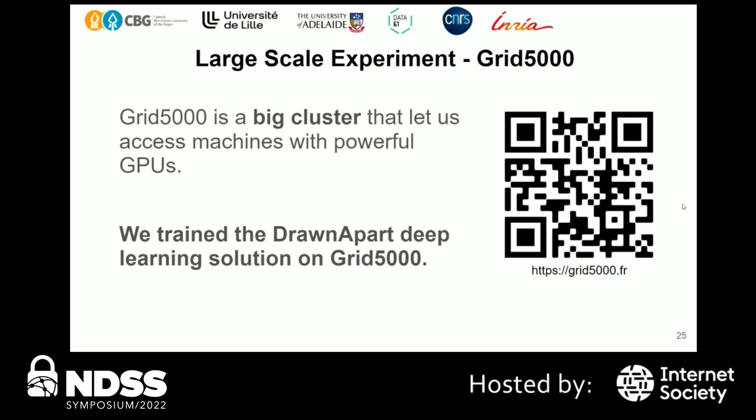Since we switched to a deep learning approach, we needed powerful machines with a lot of GPU power. We used Grid5000, a set of powerful servers distributed across different parts of France, which gave us access to machines with powerful GPUs. That's what we used to train the DrawnApart deep learning solution and to optimize different parameters and try various neural network techniques.